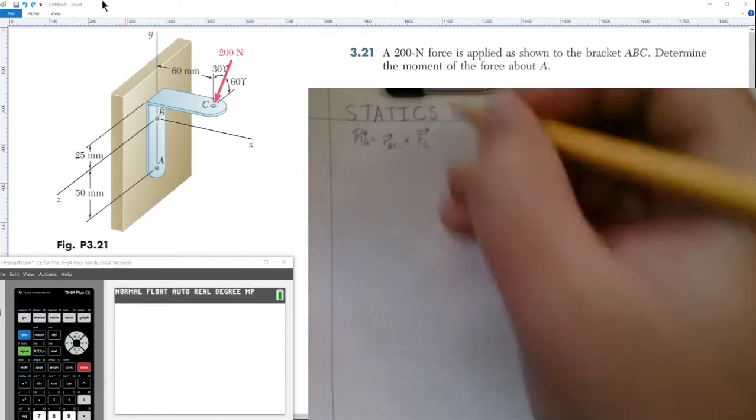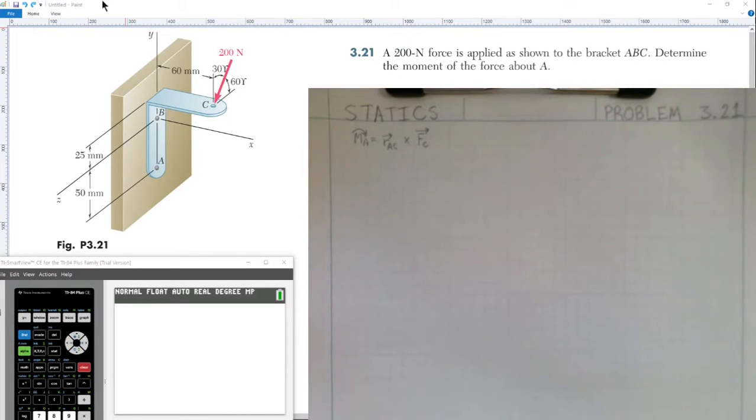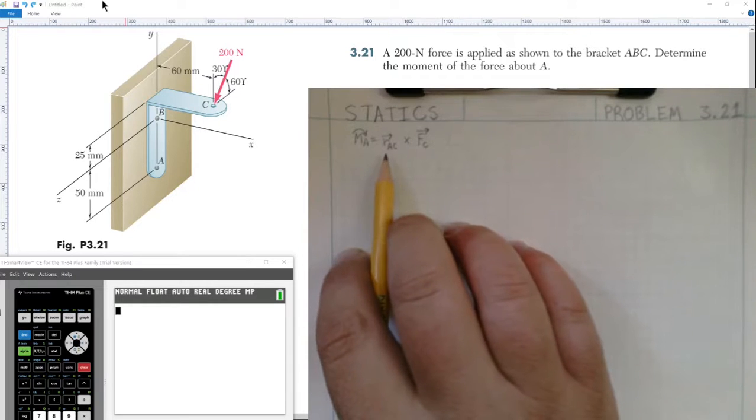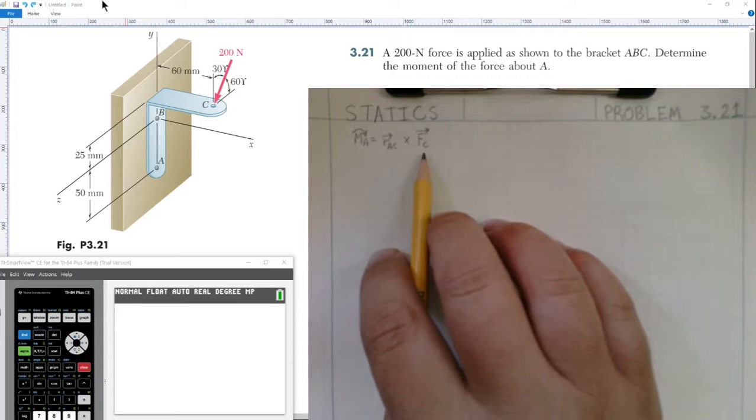We need to find a few things. First we need to figure out what this position vector is from A to C, and we need to break down force C into its components on the axis.